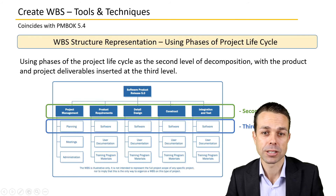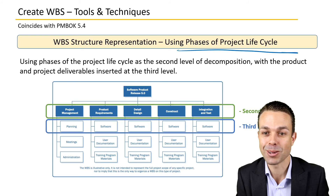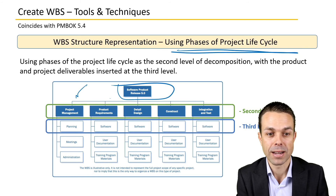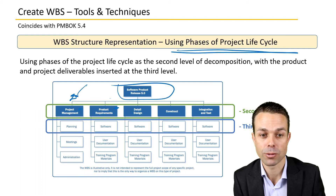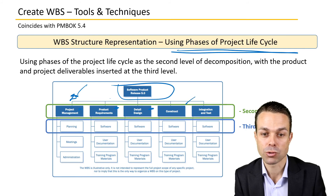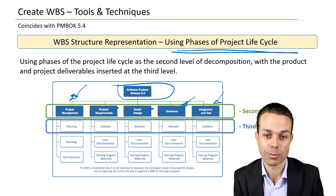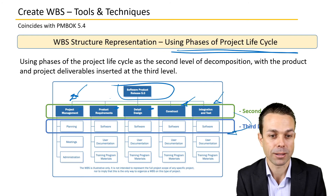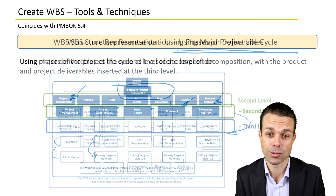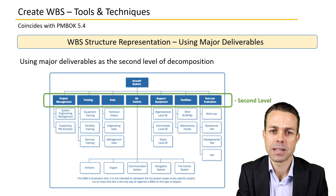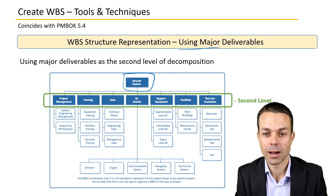You might also use phases of the project life cycle to break down the WBS. Here's an example with one project broken into different phases: project management, products, requirements, detailed design, constructing, integrating, and testing. Over those different phases we break down what's being delivered — planning meetings, administration, software, user documentation, training program materials, and so on. Another way is using major deliverables, breaking each down into levels — level two, level three, level four — with work packages for each.